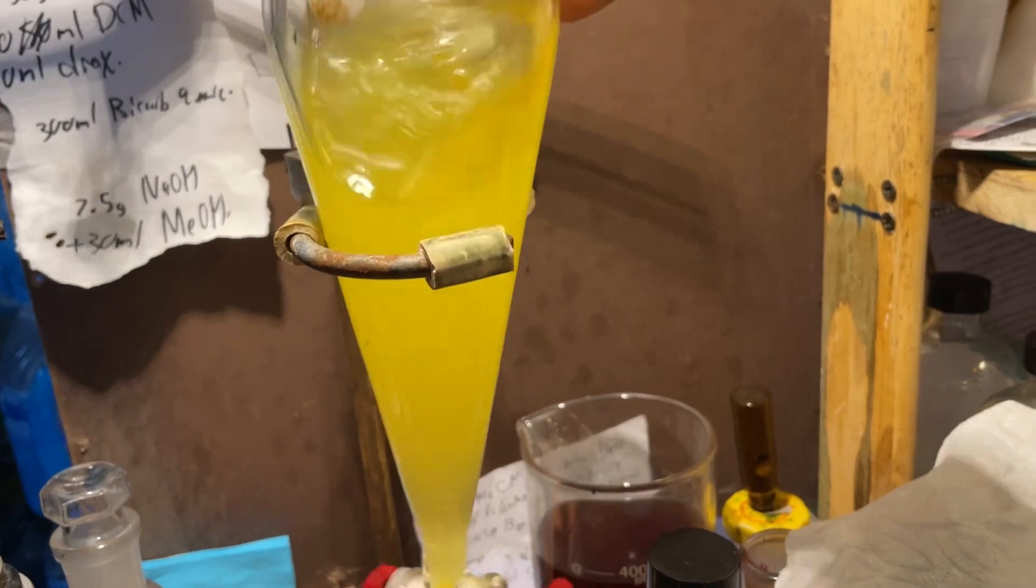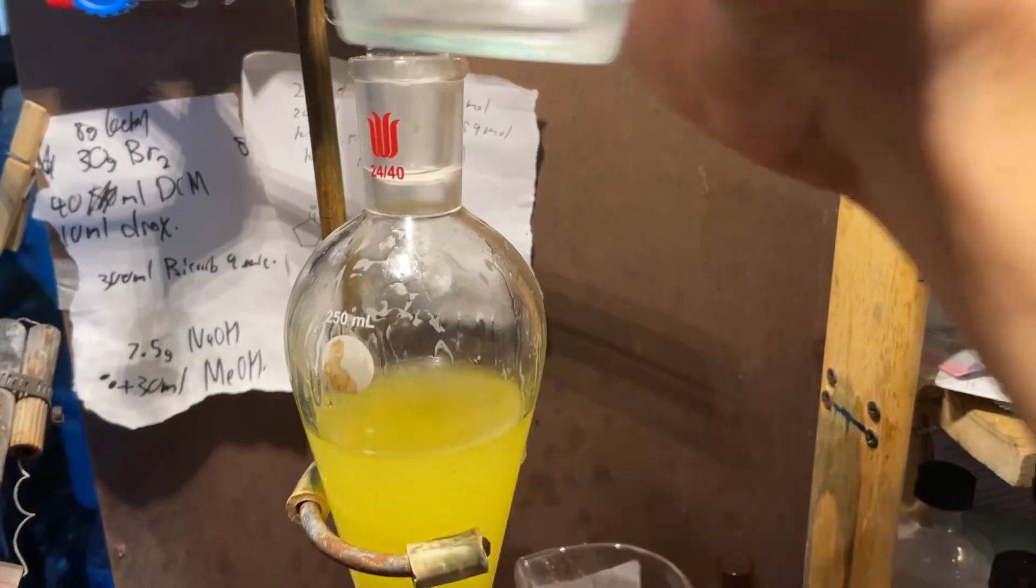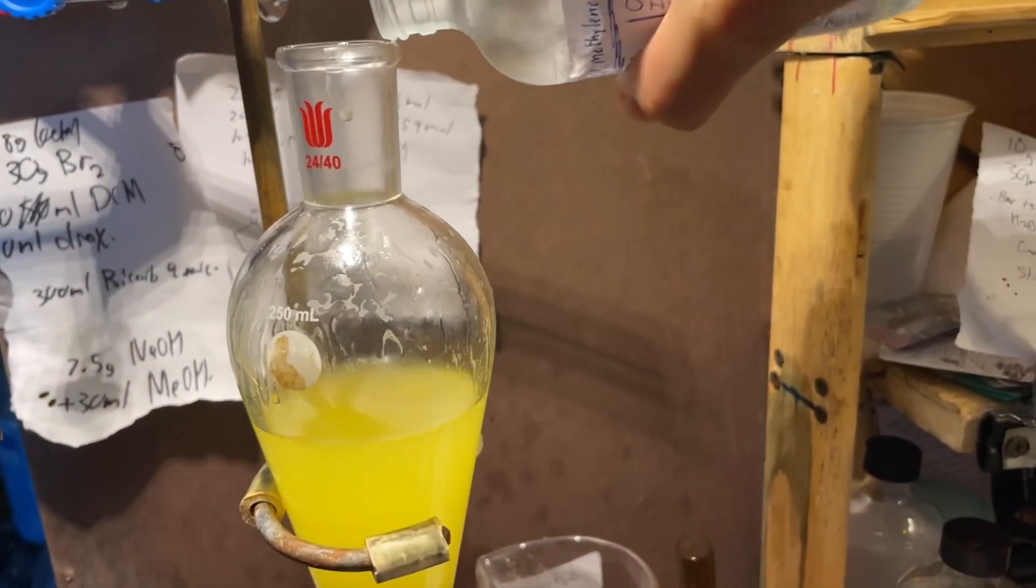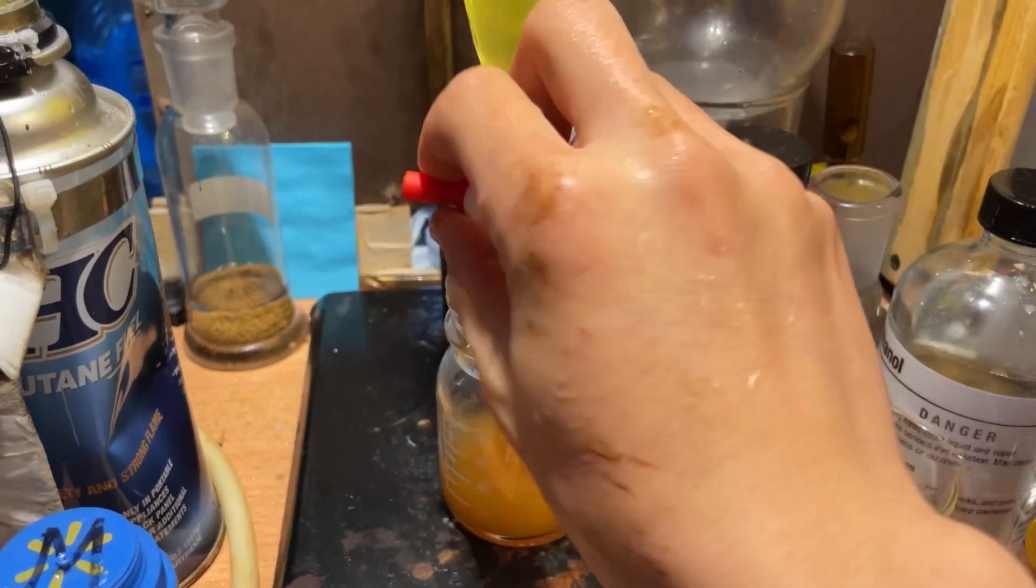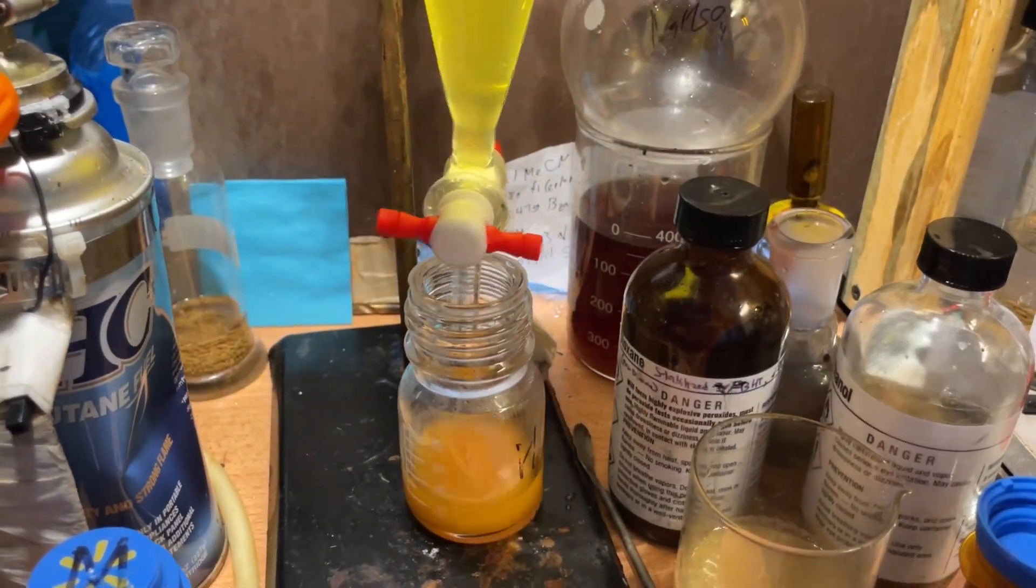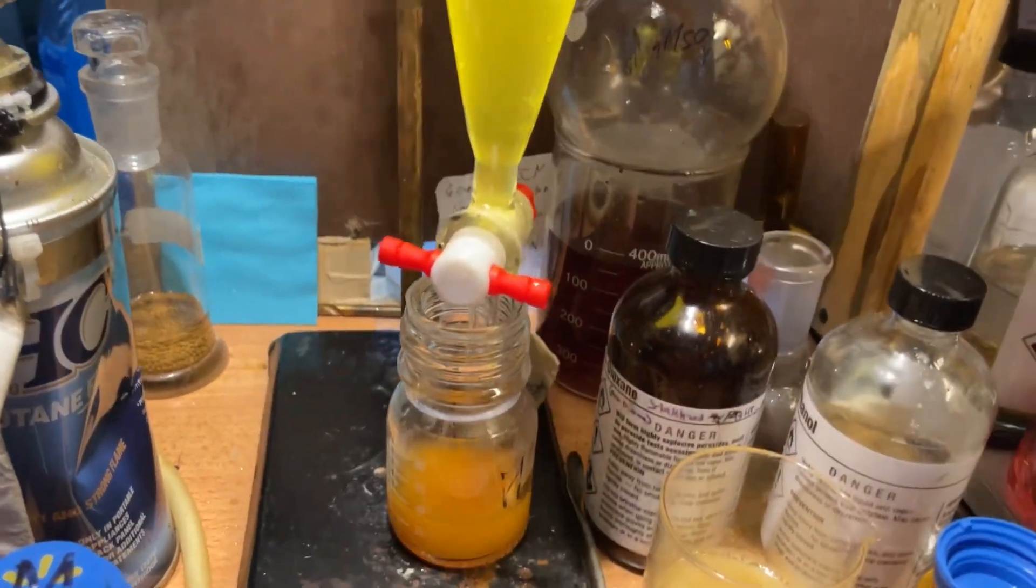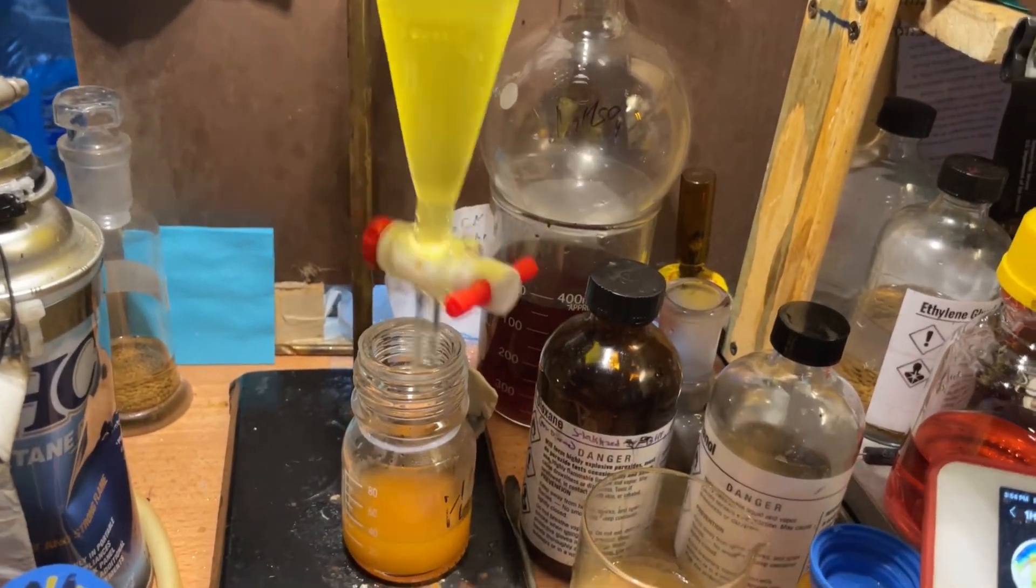Now, we're going to set that aside for now, and we're going to extract the aqueous with some dichloromethane. Now, I did not let the aqueous layer cool down, so yeah. And, again, a big dumb. So, oh, well, we're going to lose some yield, but that's fine for me, because I'm not after yield. I just want some benzaldehyde around.